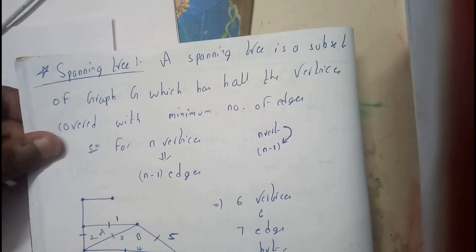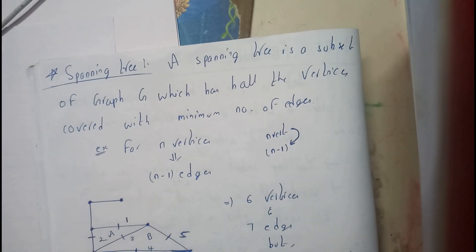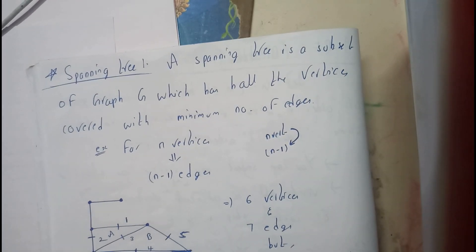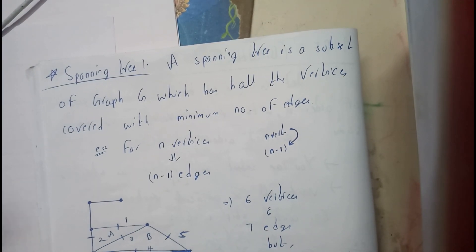A spanning tree is a subset of a graph which has all the vertices covered with minimum number of edges, which means for n vertices you should have n-1 edges, that is the minimum number.